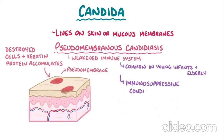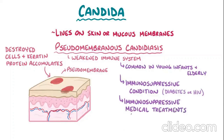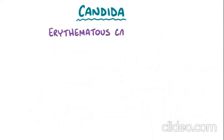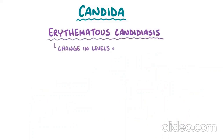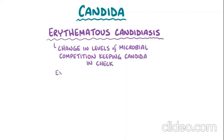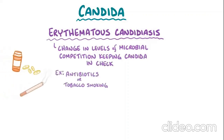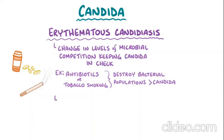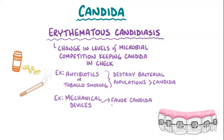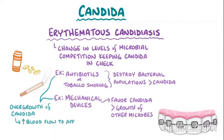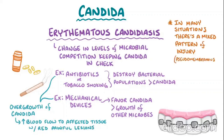Pseudomembranous candidiasis can also be related to immunosuppressive conditions like diabetes or HIV, or from treatments like steroids, inhaled steroids, radiotherapy, or chemotherapy. Another pattern is erythematous candidiasis, which typically results from changes in microbial competition. For example, antibiotics or tobacco smoking can selectively destroy bacterial populations. Mechanical devices like braces may also favor Candida growth, causing red painful lesions. Often there is a mixed pattern with both pseudomembranous and erythematous components.